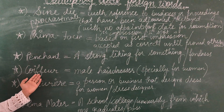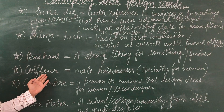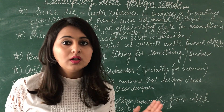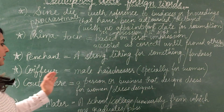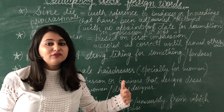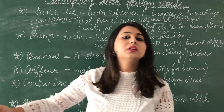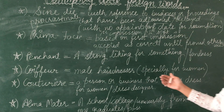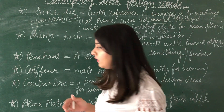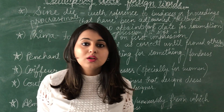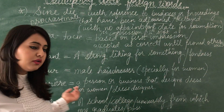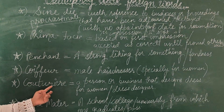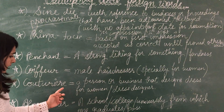The next word is 'coiffeur', spelled C-O-I-F-F-E-U-R. We pronounce it like 'coiffeur'. Coiffeur means a male hairdresser, specially for women — those who cut hair, especially for female haircuts, are called coiffeur. For example: I have a personal coiffeur.